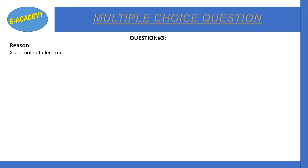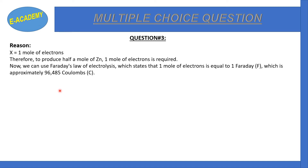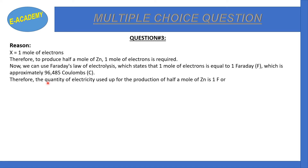Since x = 1 mole of electrons is required, we apply Faraday's law of electrolysis, which states that 1 mole of electrons is equivalent to 1 Faraday, approximately 96,485 coulombs. Therefore, the quantity of electricity used for the production of half a mole of zinc is 1 Faraday, or 96,485 coulombs.